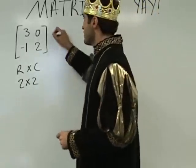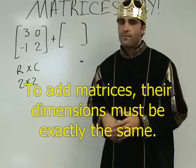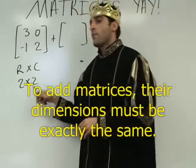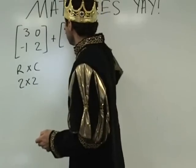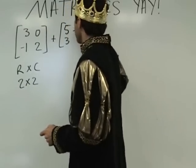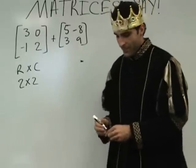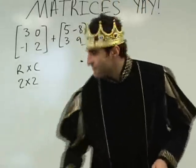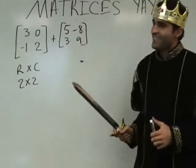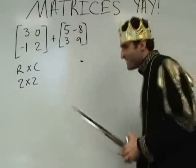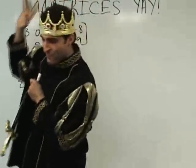First lesson: how to add matrices. The only way you can add matrices is if their dimensions are exactly the same. So we can only add two by two matrices in this case. Give me some numbers — five, nine, three, and negative eight. I just put them in randomly — the king can do that.